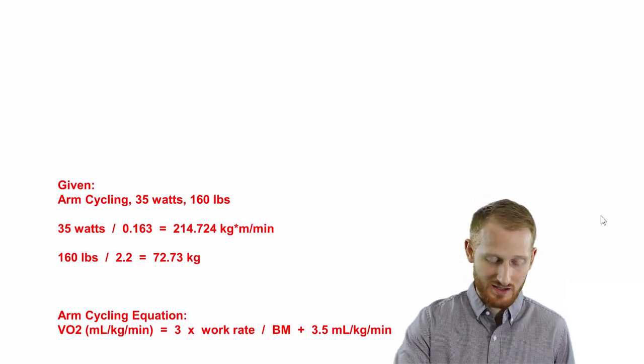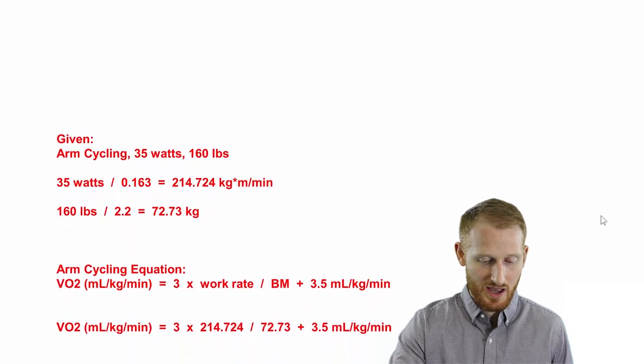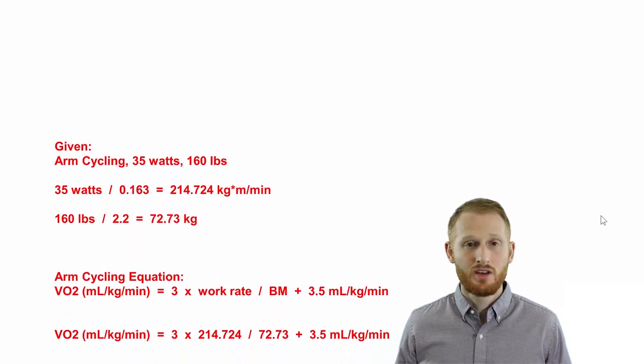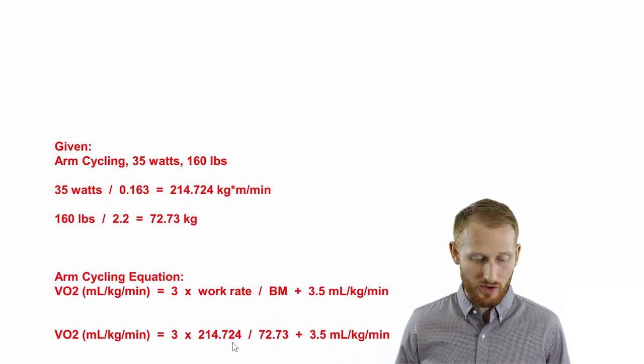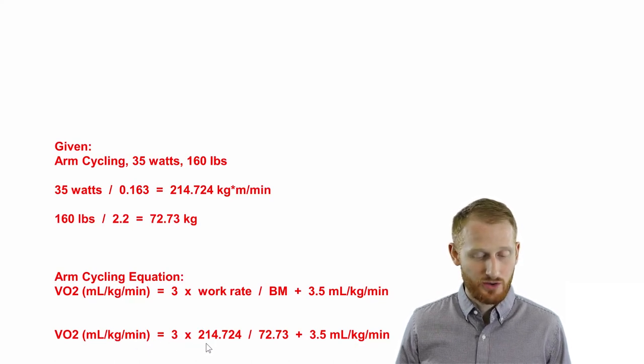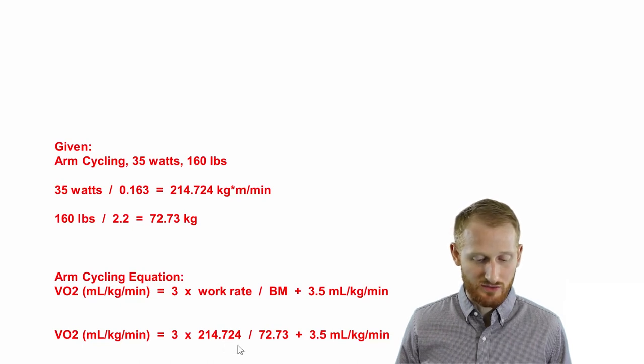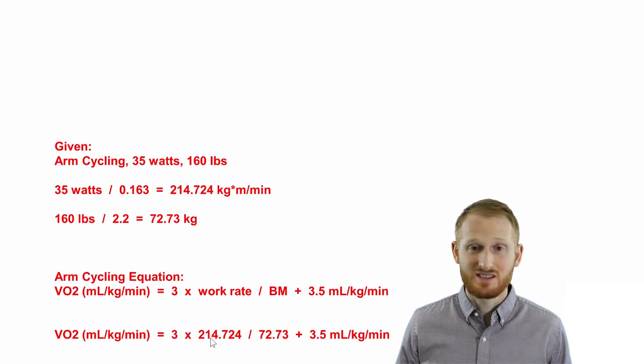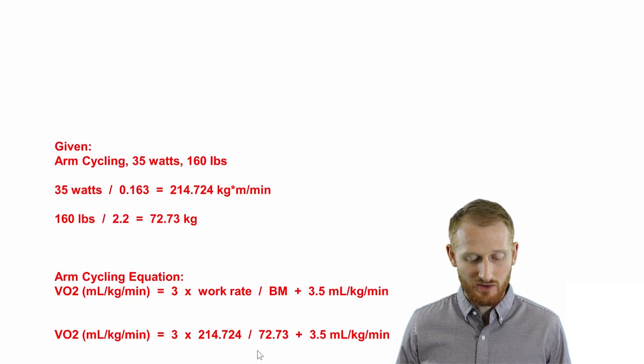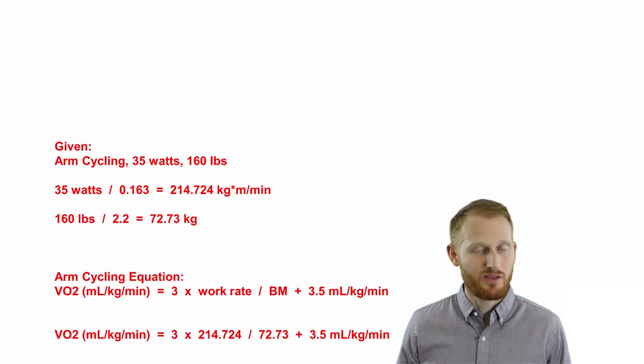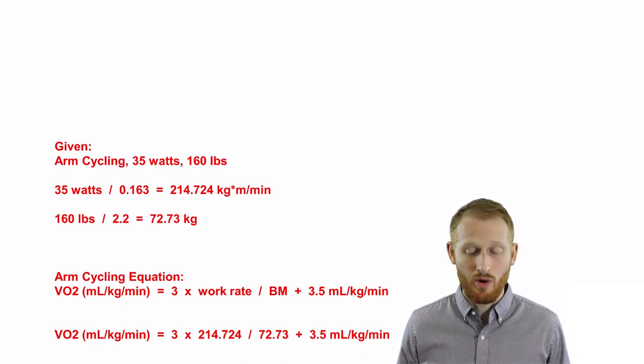So if we take this equation and we go ahead and plug in our variables here, we end up with what you see here, which is VO2 in relative terms equal to three times 214.724, this is the resistance or the work rate, divided by the body mass, which is 72.73, and add back in 3.5, which is essentially just the resting component to this.